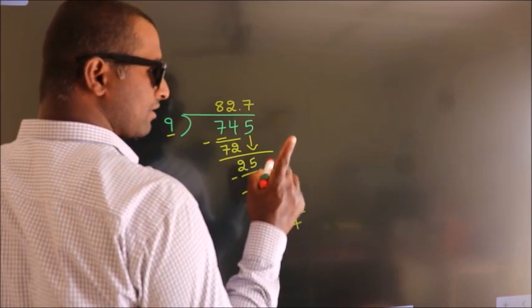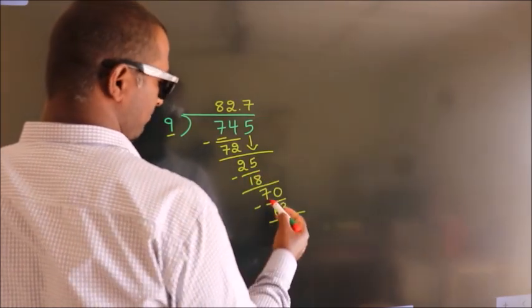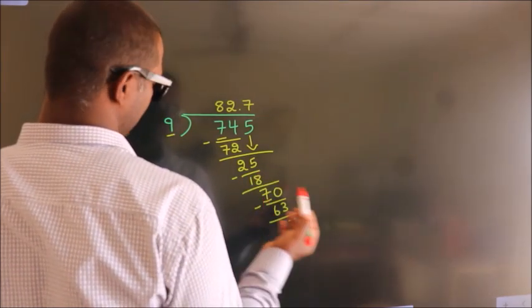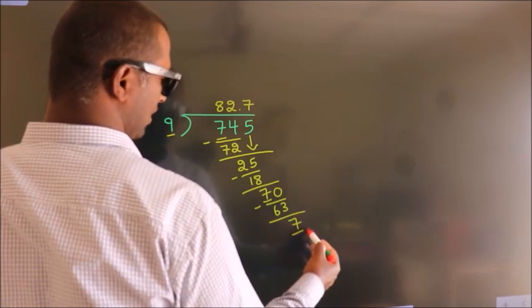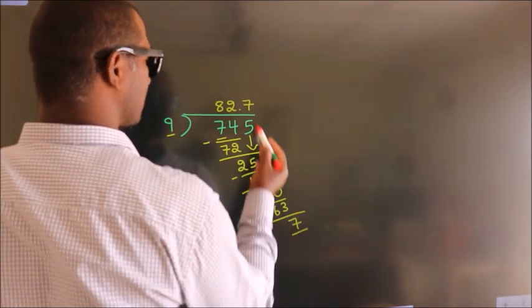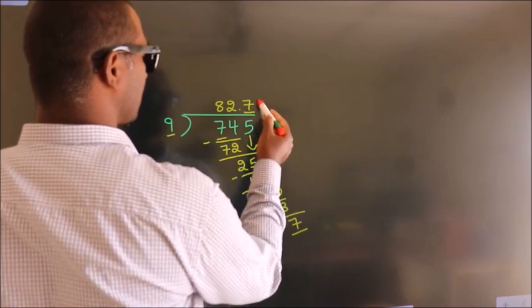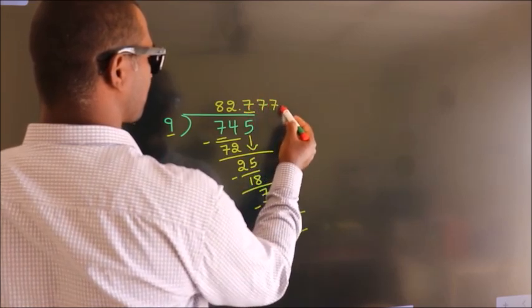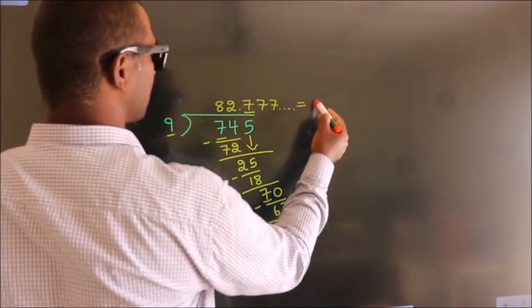Now you observe. We had 7 here and we got 7 again. That means this number keeps on repeating. So this is our quotient.